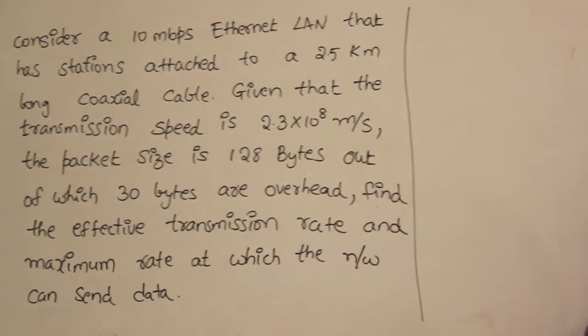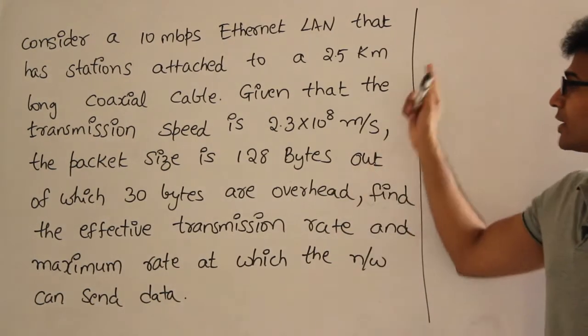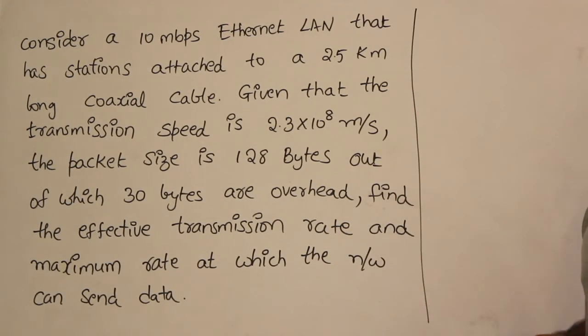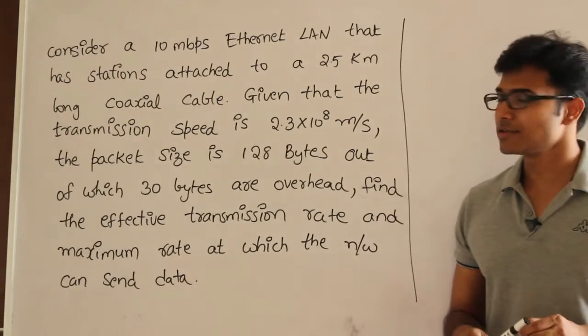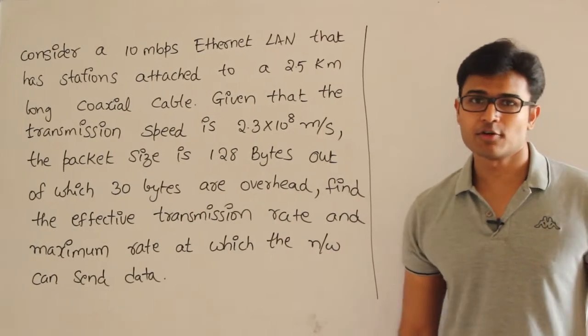Consider a 10 Mbps Ethernet LAN that has stations attached to a 2.5 km long coaxial cable. This means the length of the LAN is 2.5 km.